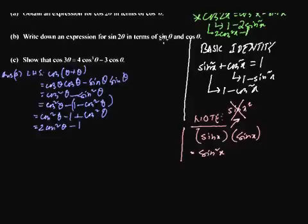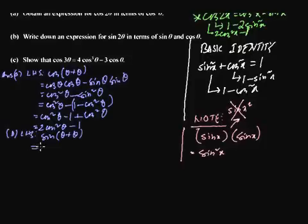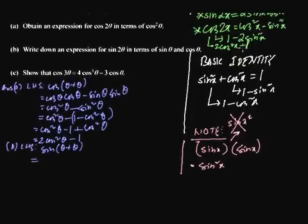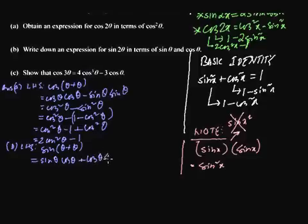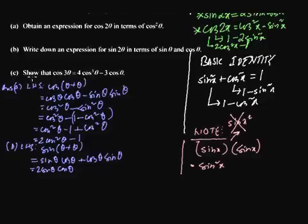Next: write an expression for sine 2 theta in terms of sine theta and cos theta. The left-hand side is sine 2 theta, which is sine of (theta plus theta). Using the identity sine(a+b) equals sine a cos b plus cos a sine b, we get sine theta cos theta plus cos theta sine theta. Adding these gives 2 sine theta cos theta.